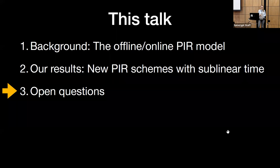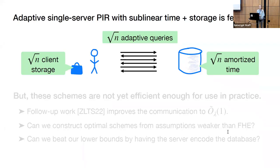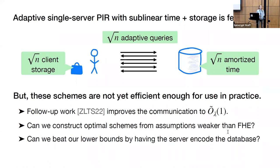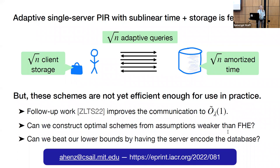What we saw in this talk is that adaptive single server private information retrieval with sublinear amortized time and sublinear storage is theoretically feasible. Unfortunately, these schemes are not quite concretely efficient enough for use in practice, so there's still work to be done to push PIR closer to practice. There has been follow-up work improving the communication of our FHE-based PIR scheme. Other exciting open questions are whether we can construct optimal PIR schemes from assumptions weaker than FHE, or whether we can circumvent our lower bounds by building PIR schemes in which the server encodes the database in addition to having client storage. Thank you for your attention.